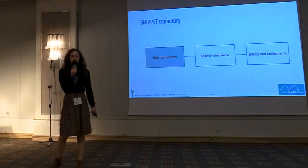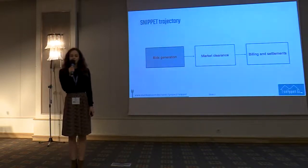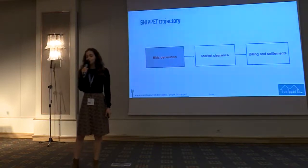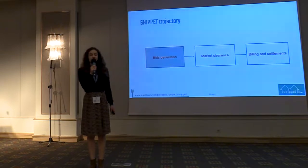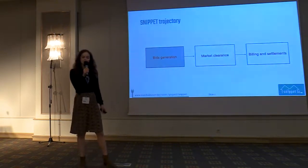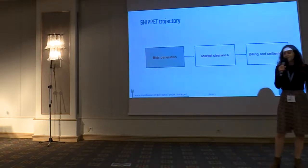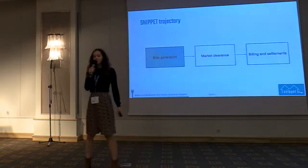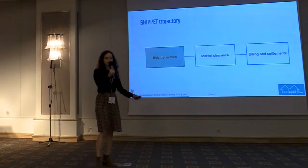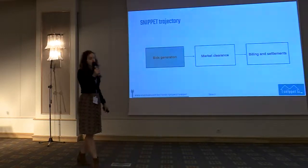Generating the bids also means determining the volumes that will be traded on the peer-to-peer market. There is an extensive body of literature on how to forecast PV generation. What we are doing is forecasting demand — you can forecast your own demand using your own data, but also take advantage of your neighbor's data, which runs into privacy issues. So we will present some privacy-preserving machine learning methods to find a unified model.